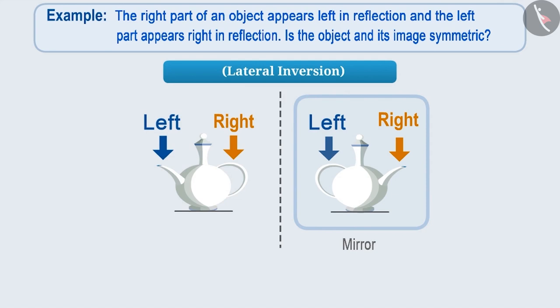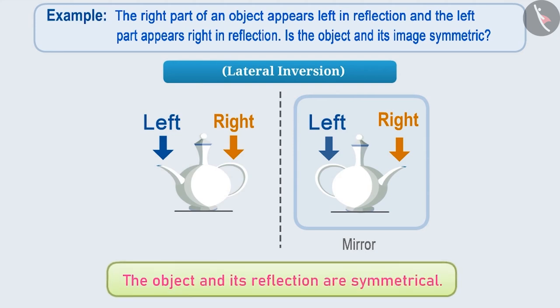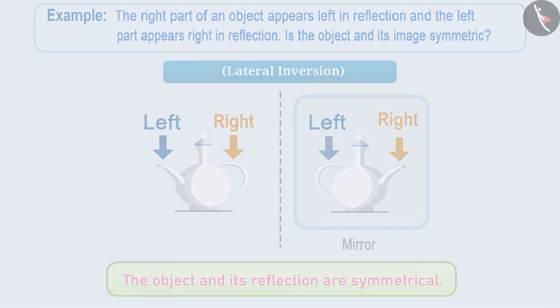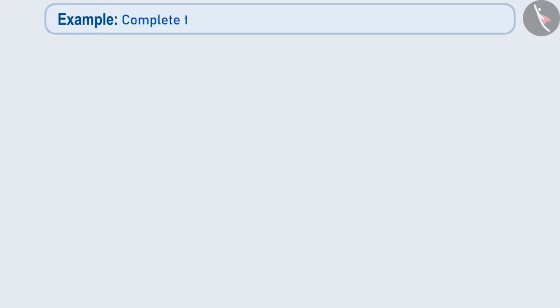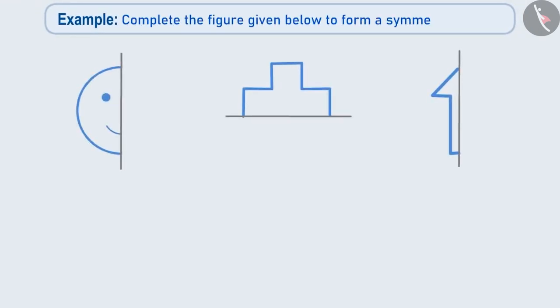Next example. Two parts of symmetrical figures can be made which are reflections of or exactly identical to each other. Let us see the given figures following this concept.